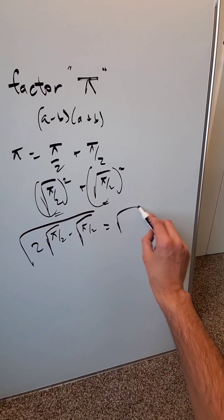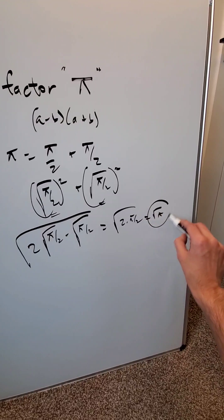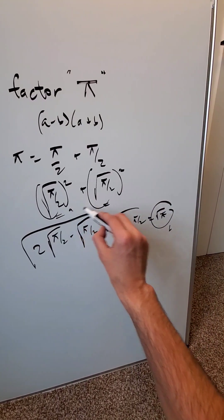Compute all of this. You're looking at √(2 times π/2), which is just √π. Here's my b term. These are my a terms.